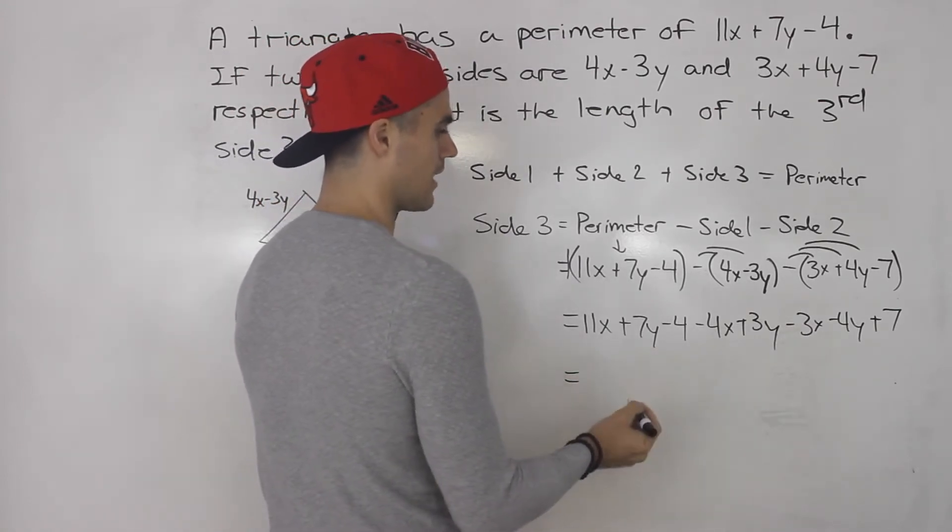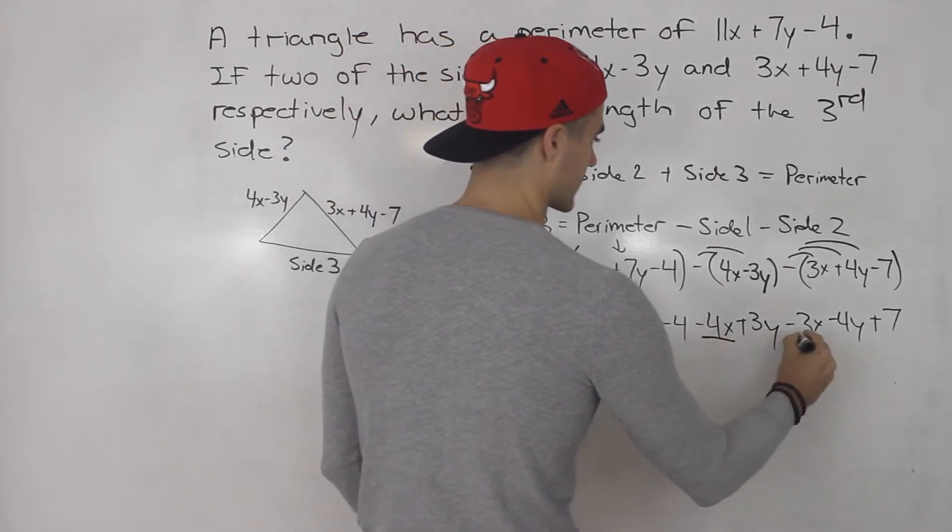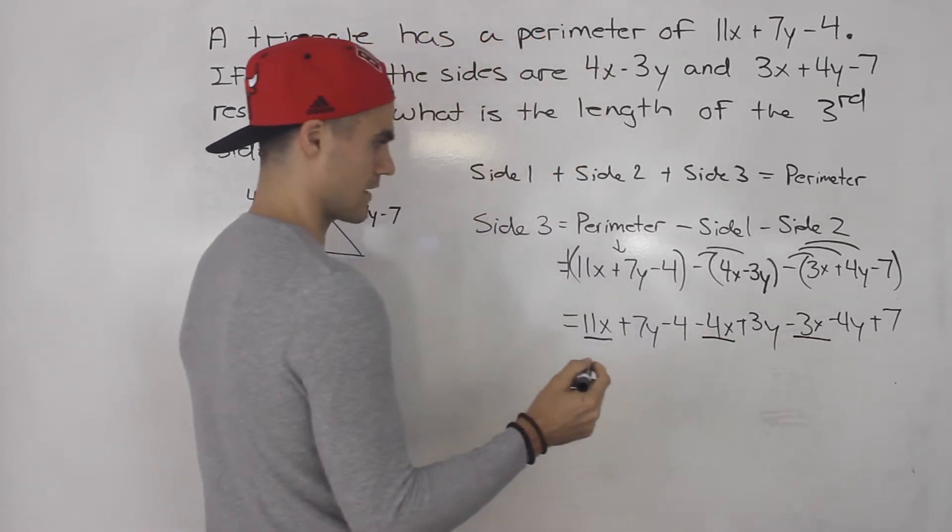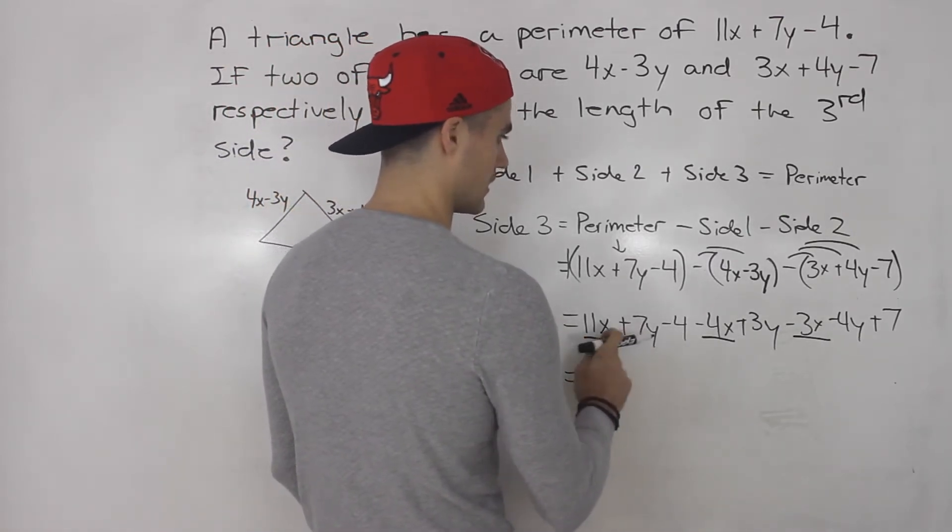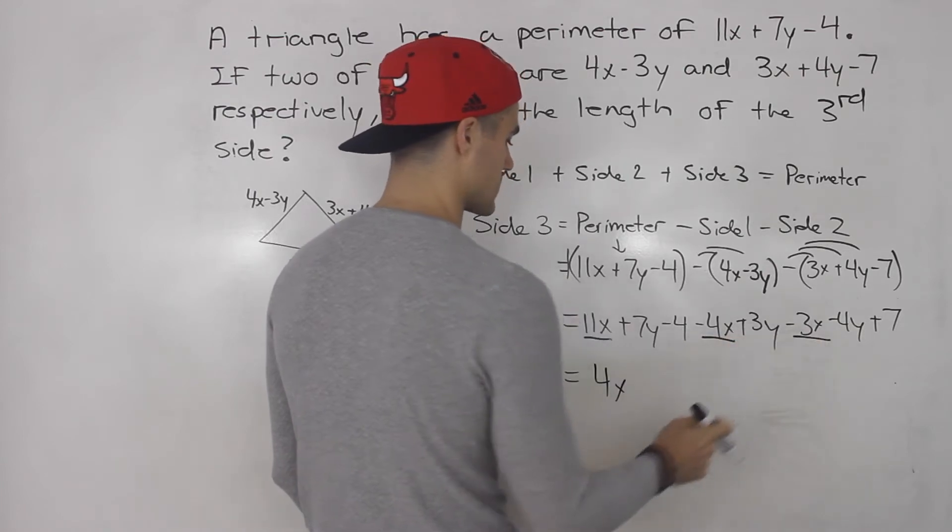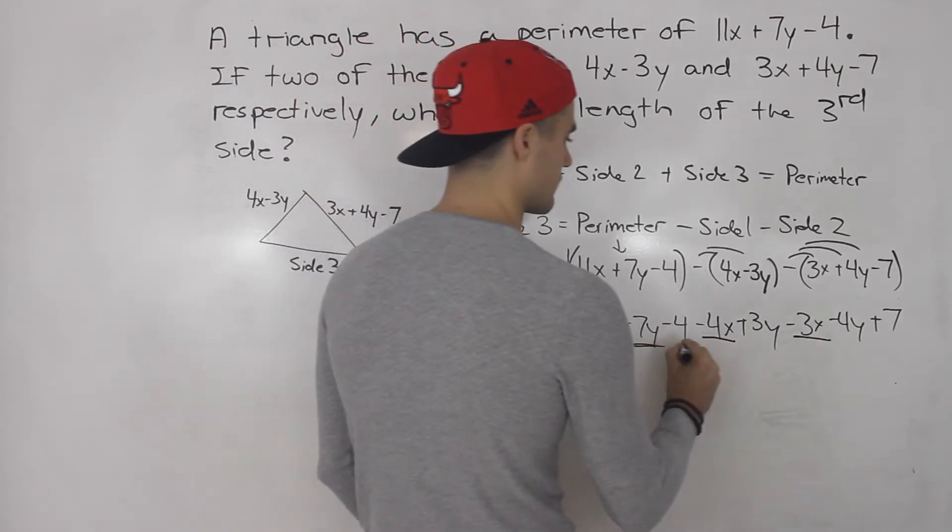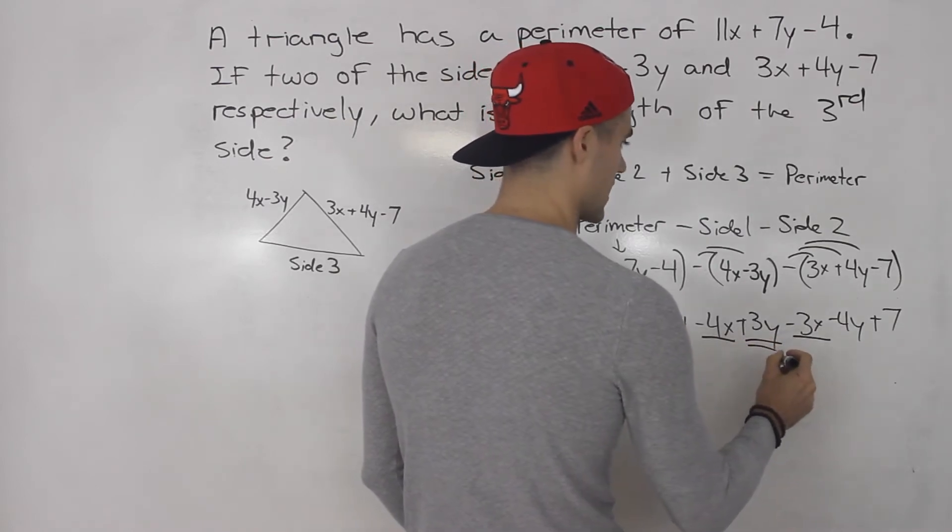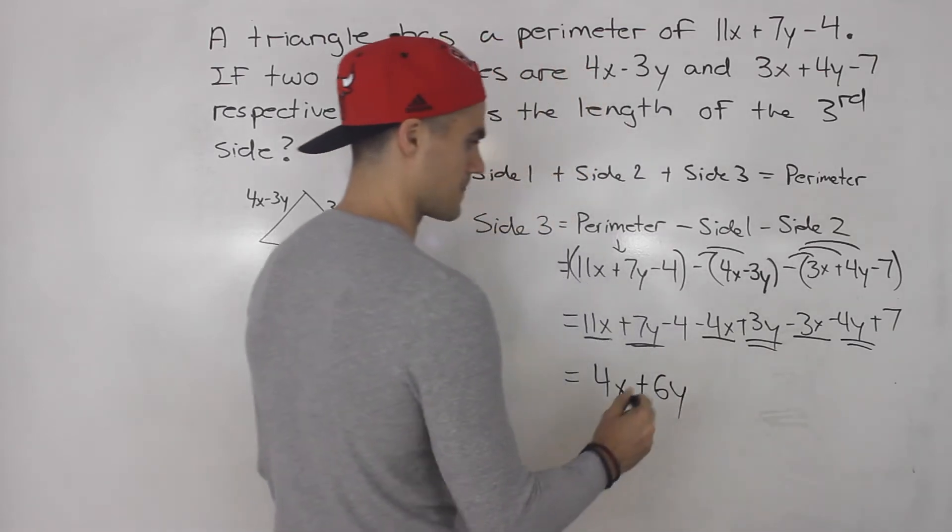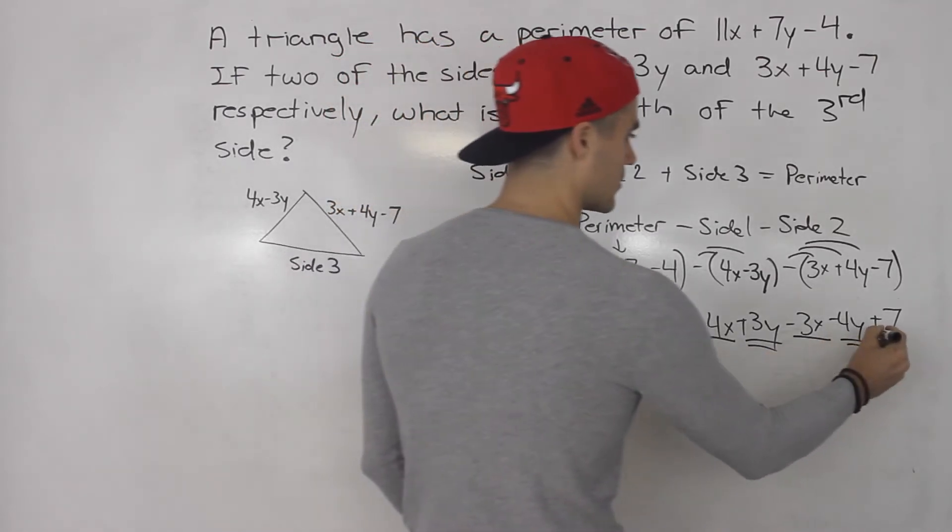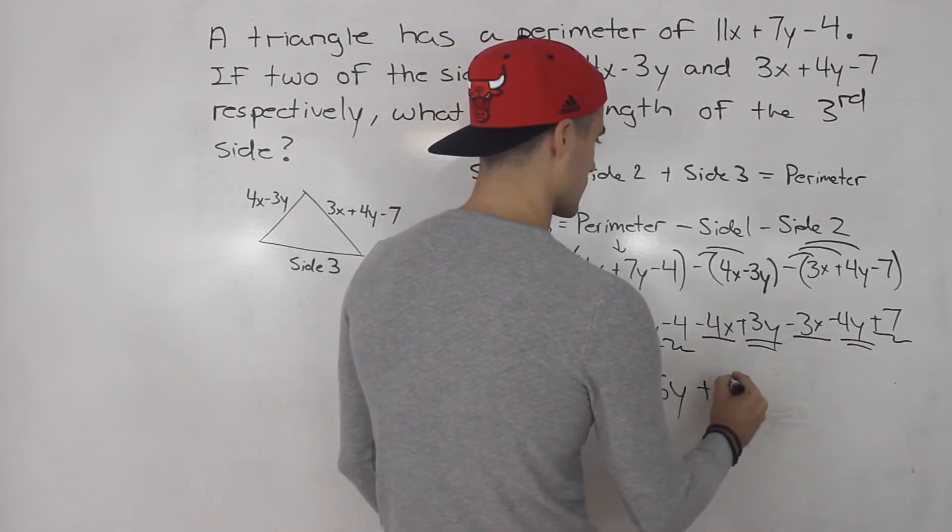So now we can just collect all of the like terms. So we have 11x minus 4x minus 3x. That would give us what? 4x, right? 11 minus 4 is 7. 7 minus 3 is 4. So 4x is there. And we got 7y plus 3y gives us 10y minus 4y gives us positive 6y. And then we got minus 4 plus 7. So that gives us positive 3.